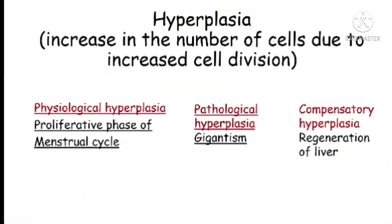The second type is pathological hyperplasia, which is an increase in the number of cells due to increased cell division in response to pathological changes. The best example is gigantism, which is the overgrowth of the body in response to hypersecretion of growth hormones. The third type is compensatory hyperplasia, which is an increase in the number of cells in order to replace the damaged cells of an organ. The best example of compensatory hyperplasia is the regeneration of the liver.